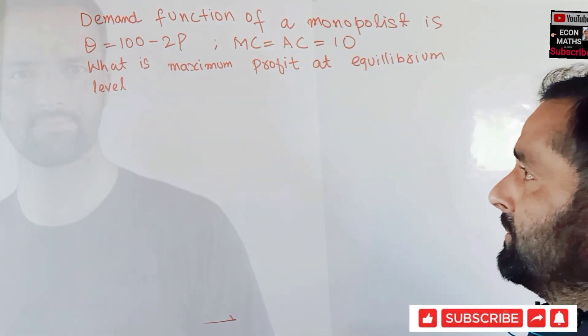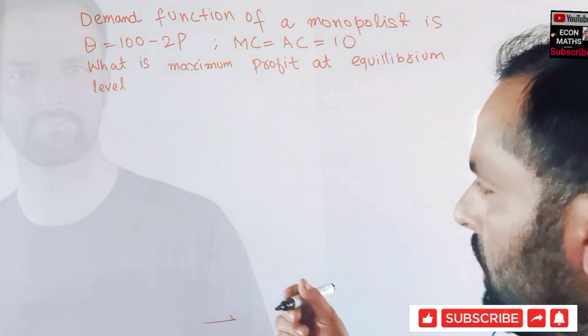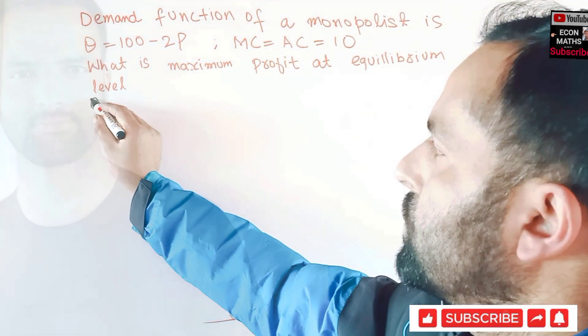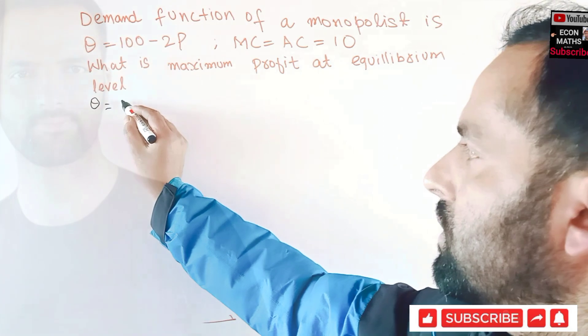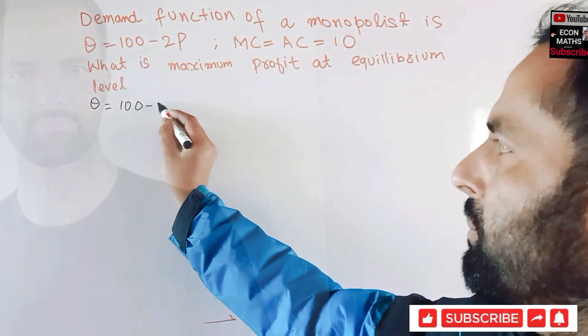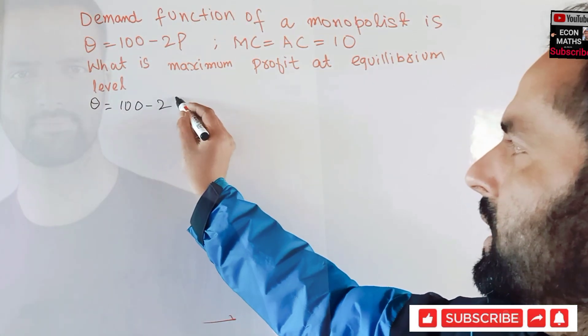We have been given a demand function. Our demand function is Q is equal to 100 minus 2P.